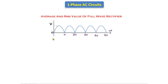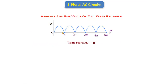This is the full wave rectifier output waveform. It is conducting from 0 to π and π to 2π, and the waveform continuously repeats. The time period of this waveform is π — for every π degrees the cycle repeats, so the time period is π. Out of π, the total conduction area is 0 to π.